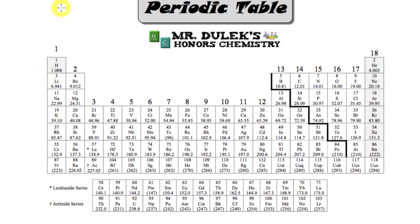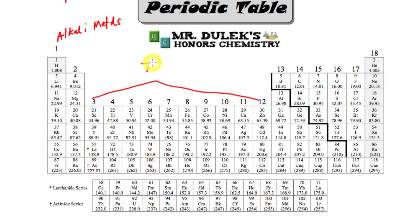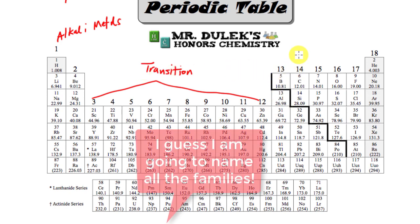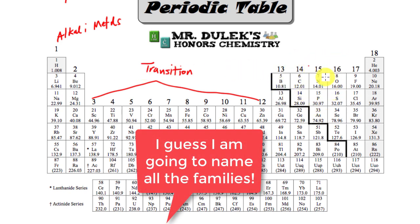Going up and down on our periodic table are groups or families — whichever you want to call them. This is your alkali metals, then the alkaline earth metals, and we call this middle section the transition metals. These are the different families on here and you should know the names of all of them. Then there's the boron family, the carbon family, the nitrogen family, the oxygen family. These are just named based on the elements at the top of those groups: boron, carbon, nitrogen, oxygen.